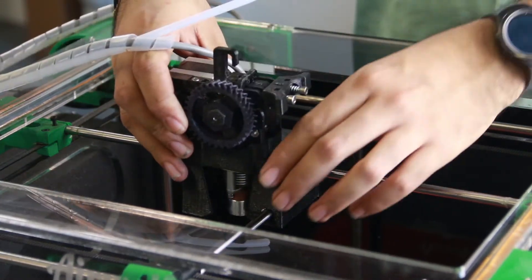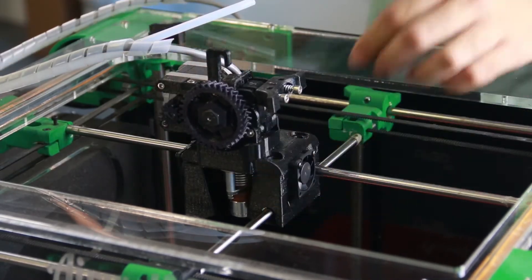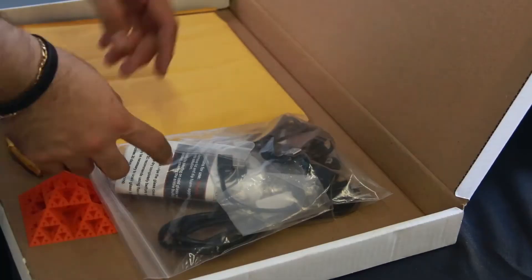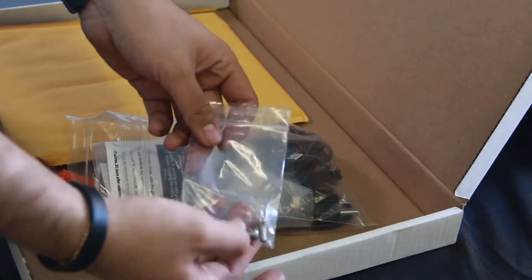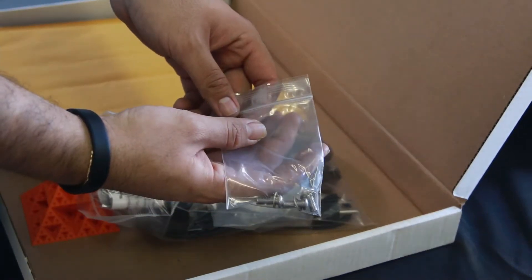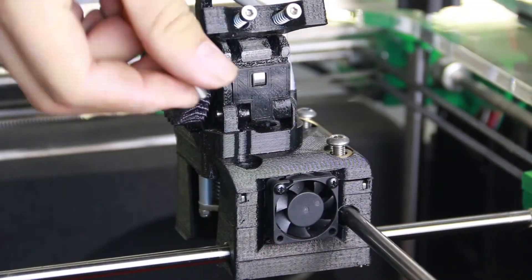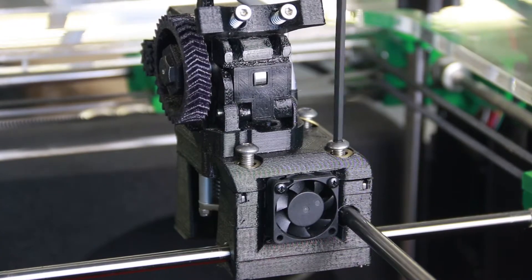Set the extruder assembly on the gantry. Take the three screws and the 4mm Allen wrench from the accessory box. Attach the extruder assembly to the gantry using these screws.